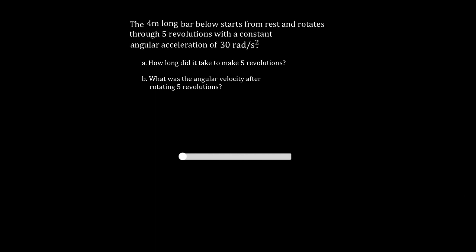How do we tackle these problems? First, identify all the variables you know. The bar revolved five revolutions — that's the angular displacement, but it's in revolutions. We want delta-theta in radians, because the acceleration was given in radians per second squared — you have to compare apples to apples. One revolution is two pi radians, so five revolutions is five times two pi, which gives us 10 pi radians.